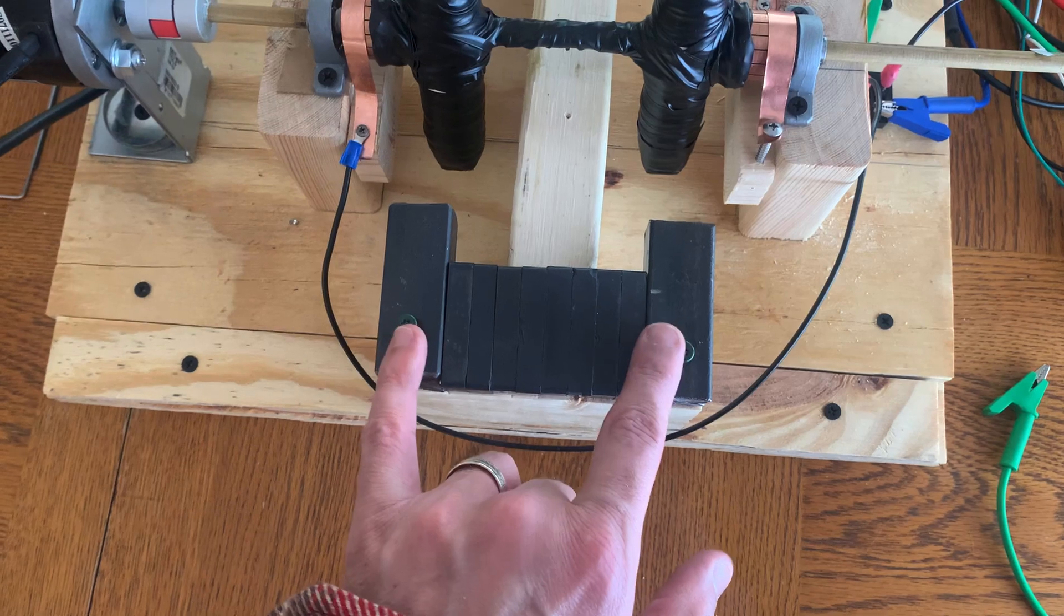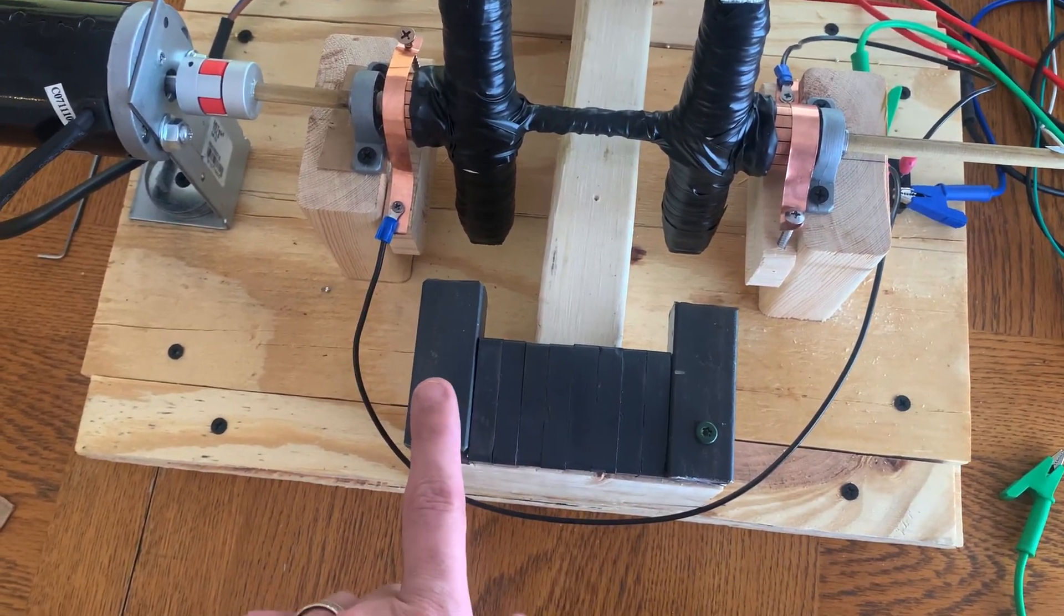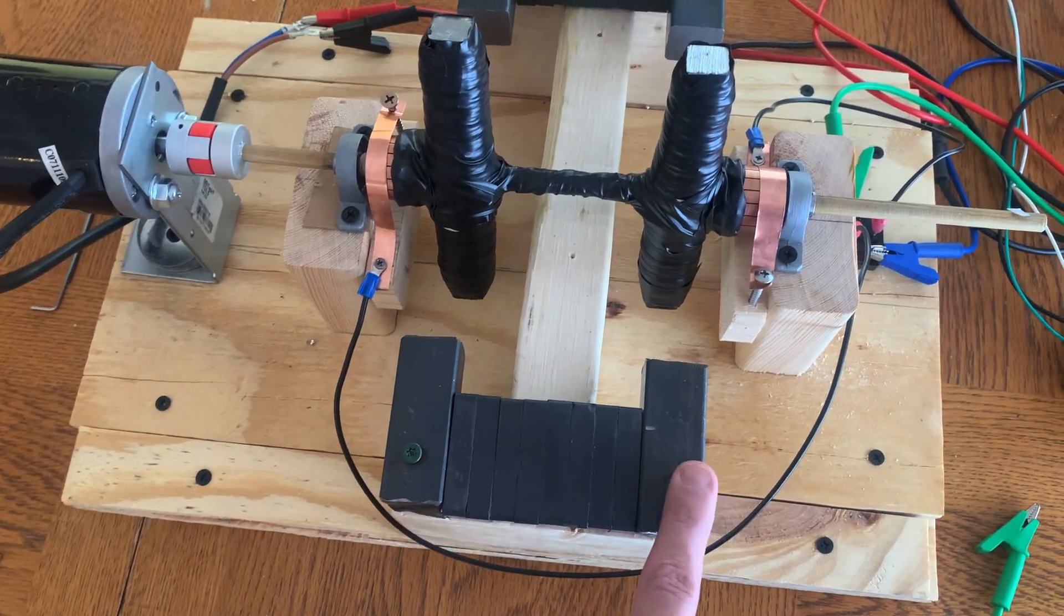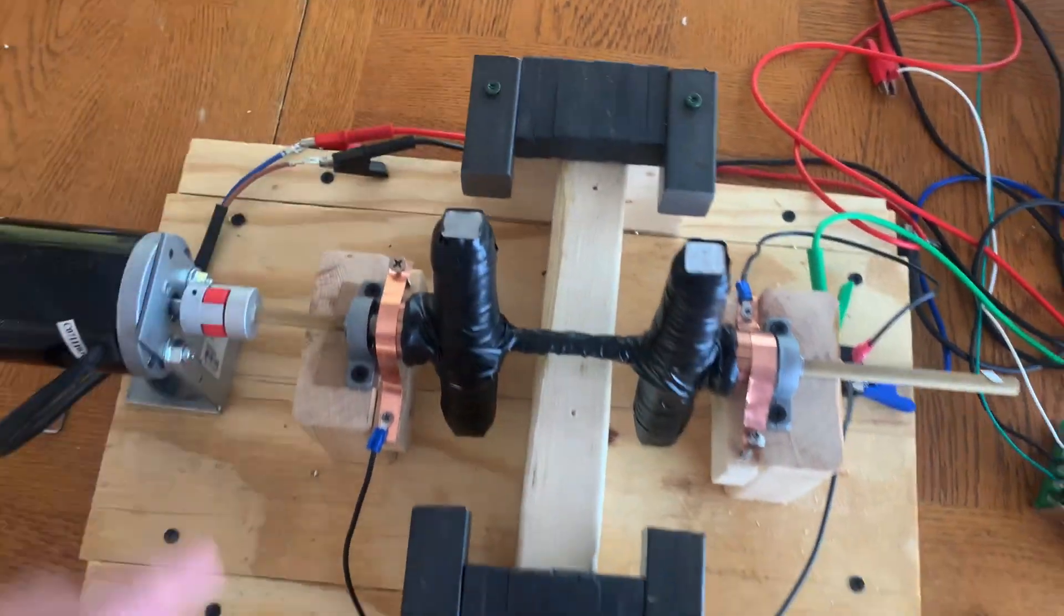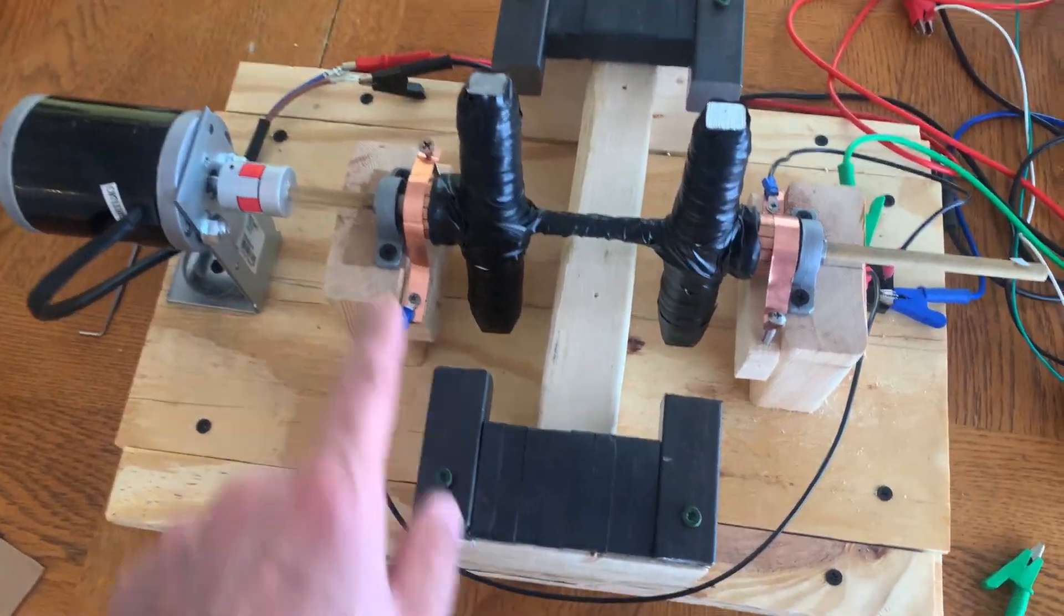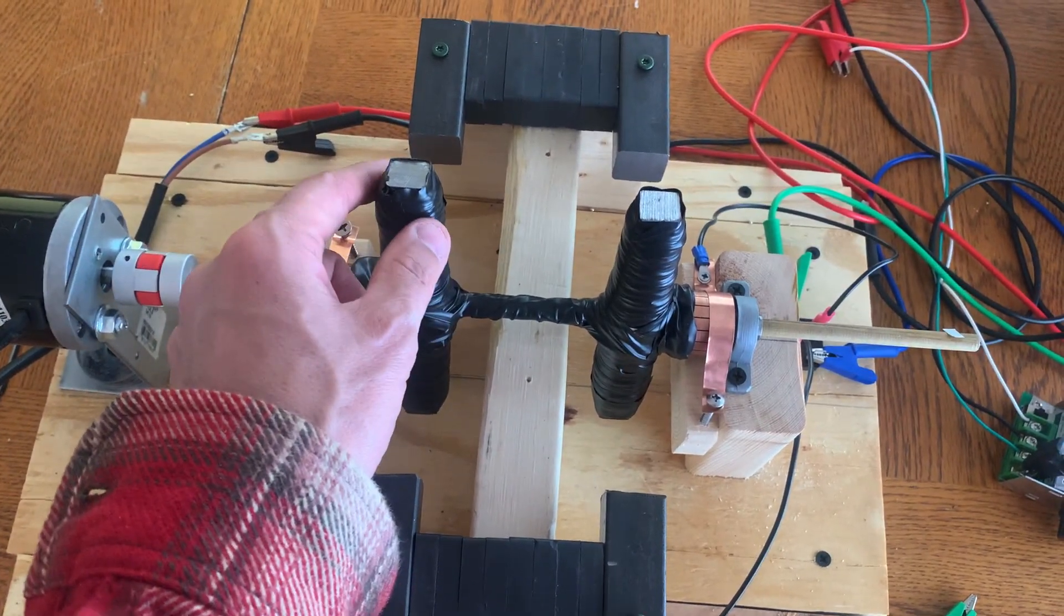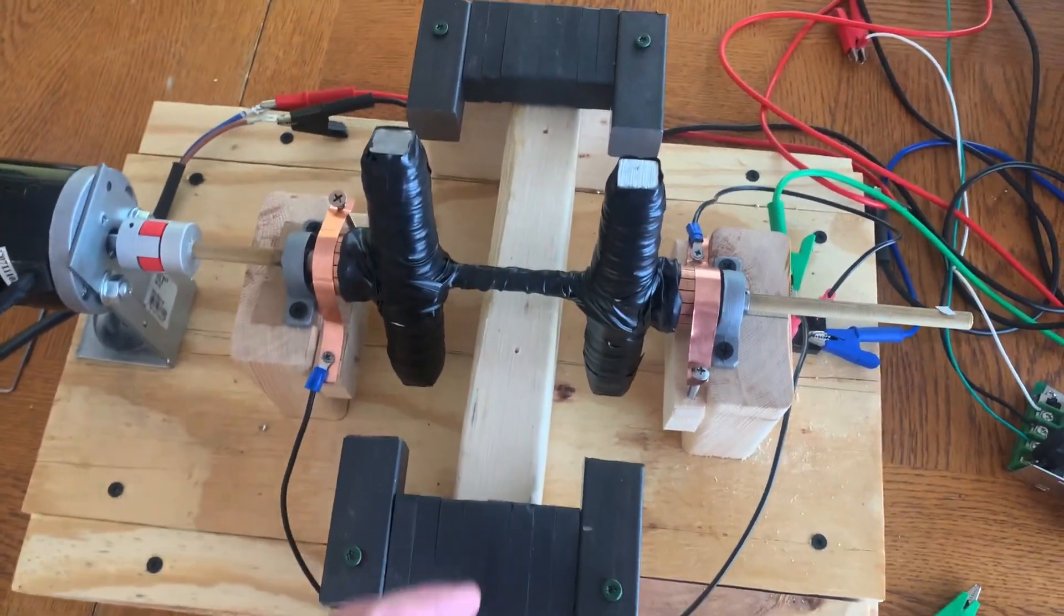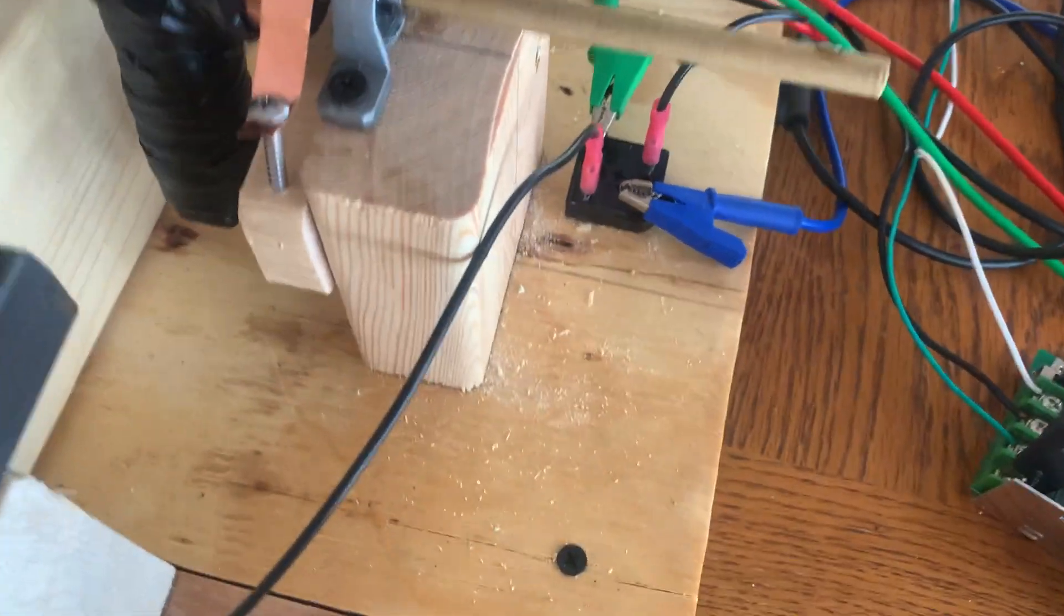Then the stator bars are interspersed with permanent magnets. So this is north, this is south, this is north, and this is south. It's causing a magnetic flux to go through the rotor bars, which then by induction we're going to get electrical generation through the commutator.